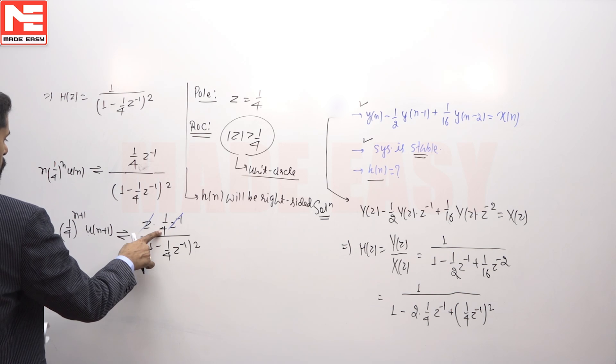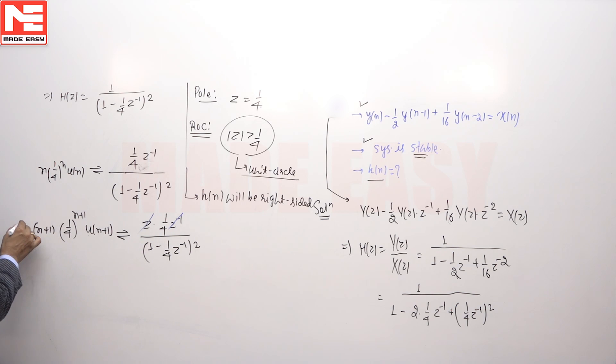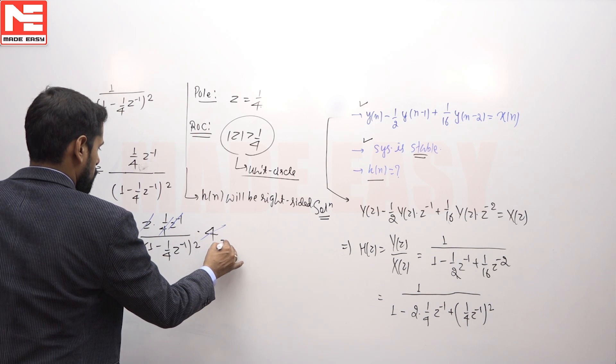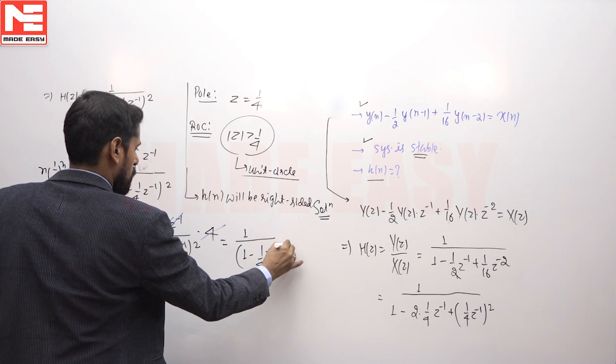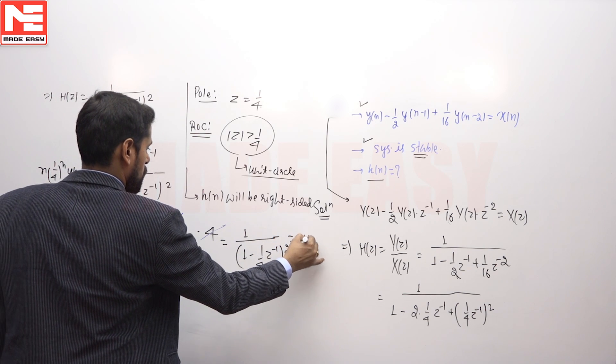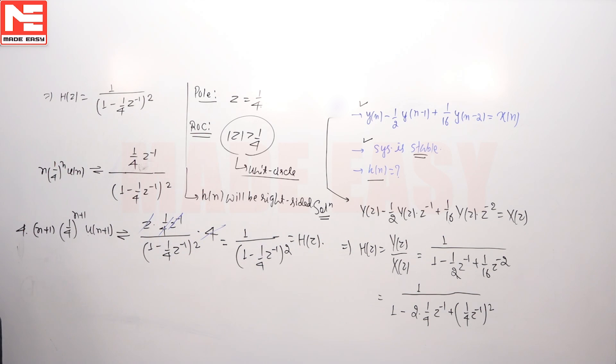To cancel out this 4 term, we will multiply LHS and RHS with value 4. If we multiply LHS and RHS of this equation with value 4, then this 4 will also be cancelled out. And RHS will be equal to 1 upon (1 minus 1/4 z inverse) whole square, which will be equal to H(z). And whatever be the inverse of H(z), that particular inverse will be equal to h(n).